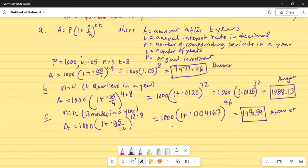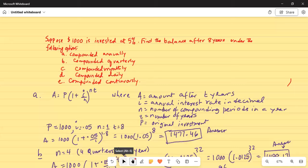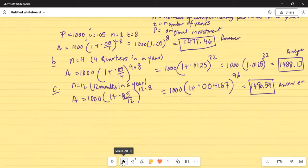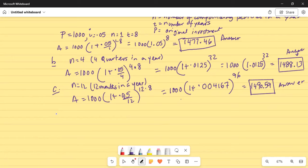Okay, and part D is compounded daily. Part D is compounded daily. So part D compounded daily means there are 365 days in a year. So N is 365 days in a year.